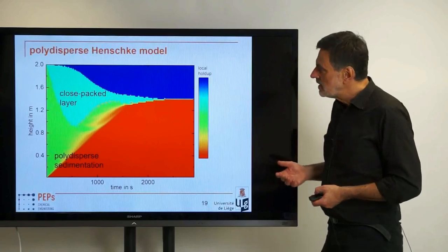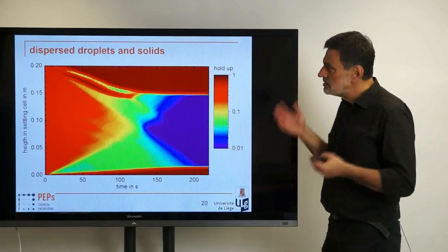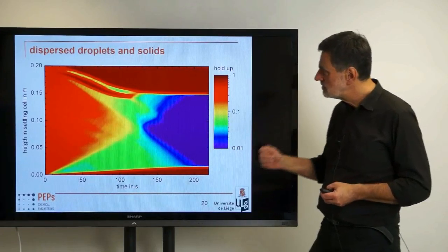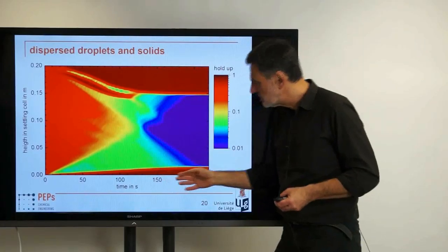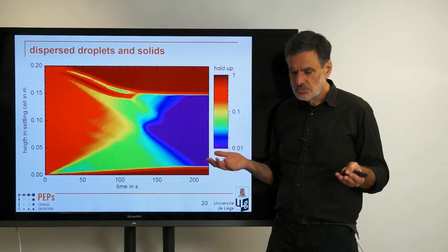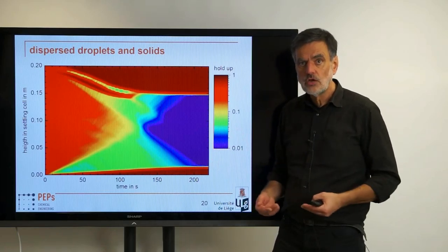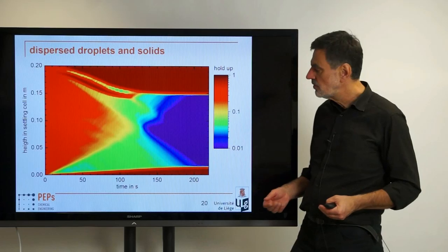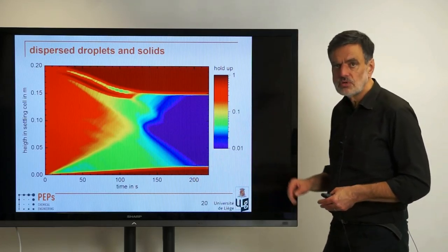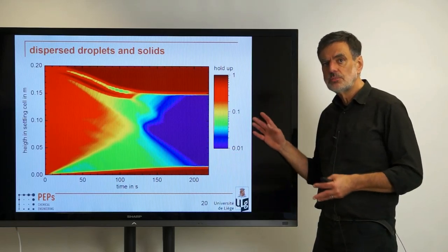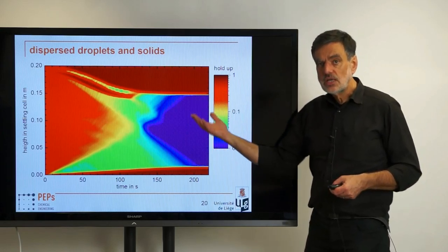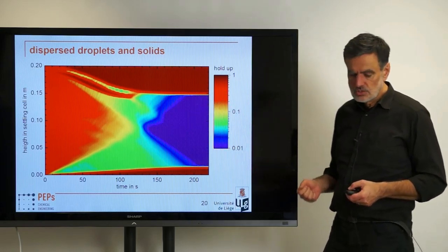We are even able to take into account a variety of other phases — for example, dispersed droplets and solids that have different types of interactions. Here the droplets are rising while the solids are sinking down, as in a reactive extraction step where simultaneously a crystallization occurs for product accumulation. How the crystals move and interact with the droplet phase can all be simulated. At the moment, we are validating the different underlying models in order to validate also our simulation results in the end.